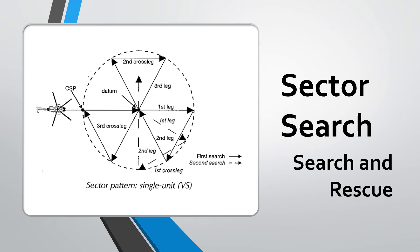So what is the sector search method in a search and rescue operation? Before I start talking about it, I want you to pause the video here and have a careful look at the diagram on your screen, because this pretty much sums up the sector search method. You can see there is a point marked CSP — that stands for commence search point — and the pattern of search is through the different cross legs marked on your screen. There's a first search carried out and then a simultaneous second search carried out by joining the cross links.